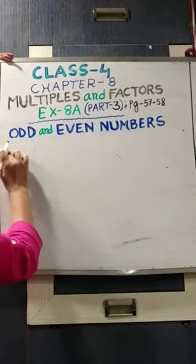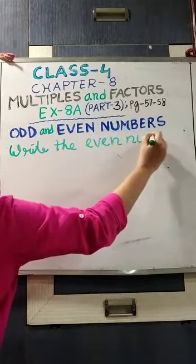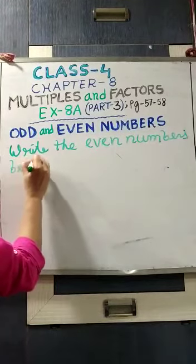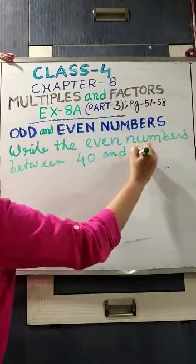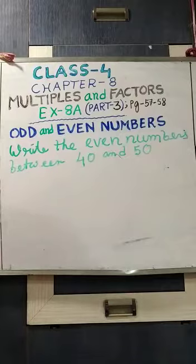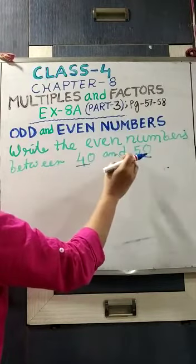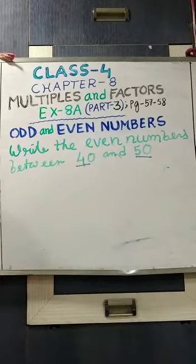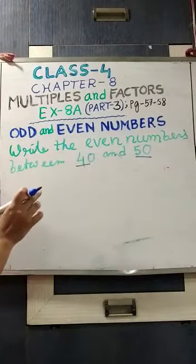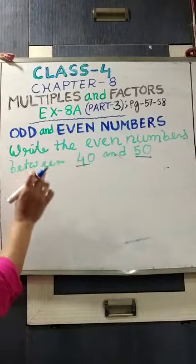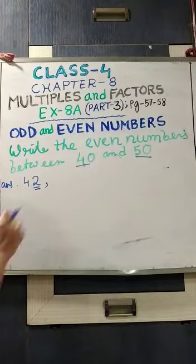Suppose you are asked: write the even numbers between 40 and 50. Between 40 and 50 means you will not take 40 and 50 — you start after 40 and finish before 50. Even numbers end with an even digit. After 40 comes 41 — it ends with 1, an odd digit, so we cannot take that. So it will be 42 — one's place is 2, an even digit. Then 43 — 3 is an odd digit, we will not take it. Then 44 — one's place is 4, an even digit.